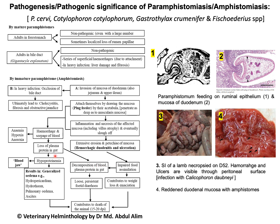Due to the loss of plasma protein into the gut, there will be decomposition of blood and plasma protein into the gut, ultimately leading to loose and persistent fatal diarrhea. Due to the extensive damage of the small intestine, there will be impaired food absorption or assimilation, and together with the decomposition of blood plasma protein and fatty diarrhea, this leads to emaciation of the animal.